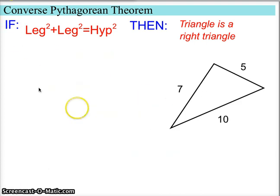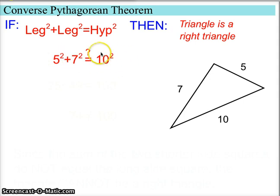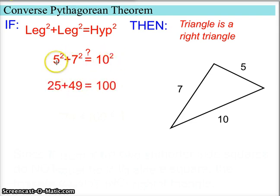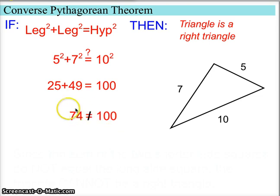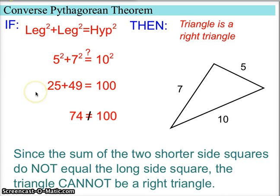Let's look at another example. Here in this triangle, is it actually a right triangle? We take our two short sides, 5 and 7, as legs, and assume the longest side, 10, is the hypotenuse. We evaluate: 5 squared is 25, plus 7 squared is 49, and 10 squared is 100. Adding 25 and 49 gives us 74, which does not equal 100. Since the sum of the two shorter side squares does not equal the long side squared, this is not a right triangle.